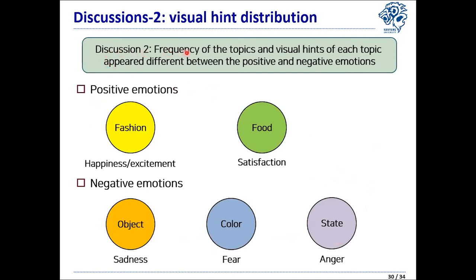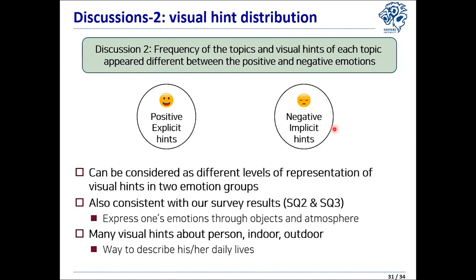The second point is about visual hint distribution. We found that the frequency of topics and visual hints appear quite differently between two emotion groups. Looking more closely, the two emotions have different degrees of abstraction: positive emotions have more explicit and less abstract visual hints, while negative emotions have more implicit and somewhat abstract visual hints. This insight can be considered at different levels of representation of visual hints in the two emotion groups.